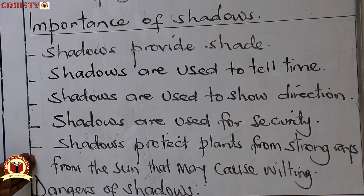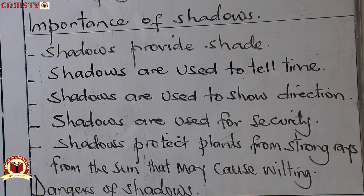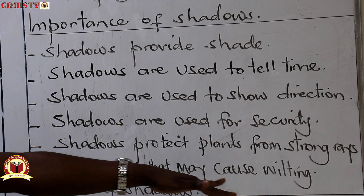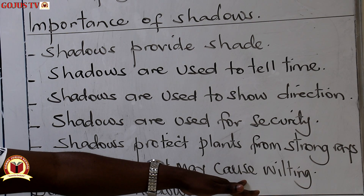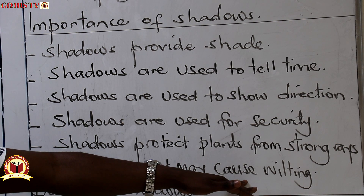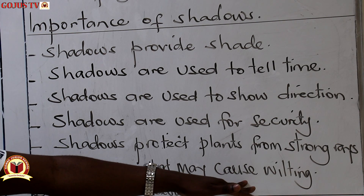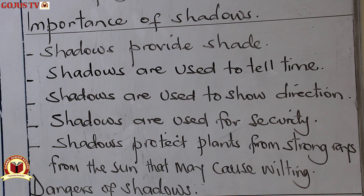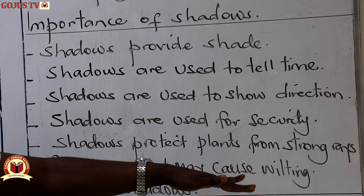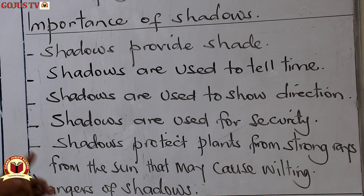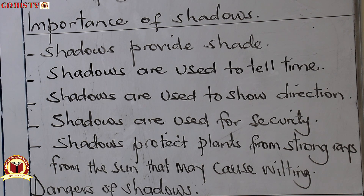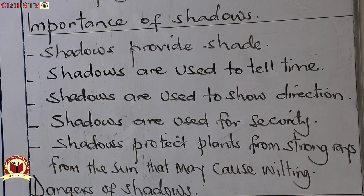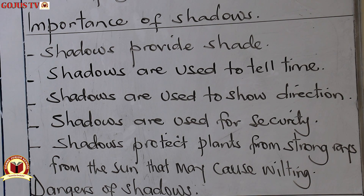Shadows protect plants from strong rays from the Sun that may cause wilting. Wilting comes as a result of excessive transpiration — when a plant loses a lot of water, it causes wilting. So shadows protect these plants from those strong rays so that the wilting problem can be controlled.